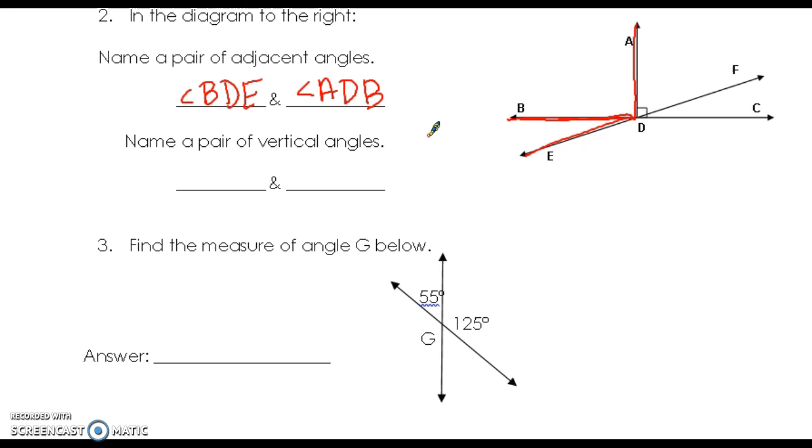All right, vertical angles share a point and they are across from each other and they are congruent. So I have BDE and FDC. They share this point in the middle and they're both the same size, so those are vertical.